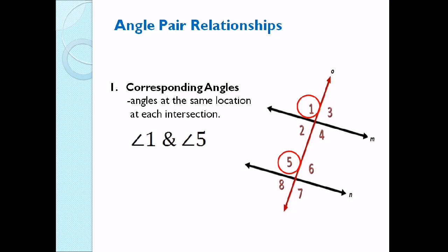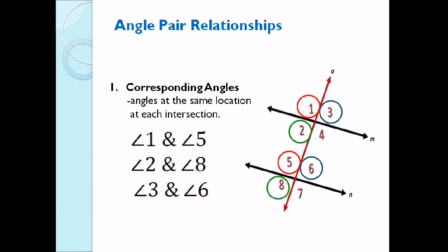Can you name the other corresponding angles? Angle 2 corresponds to angle 8, so angle 2 and angle 8. Angle 3 corresponds to angle 6, so angle 3 and angle 6. Lastly, we have angle 4 and angle 7. Those are the corresponding angles.